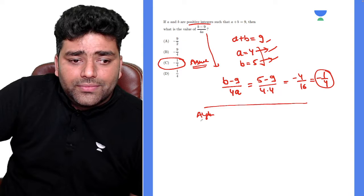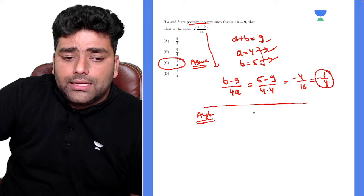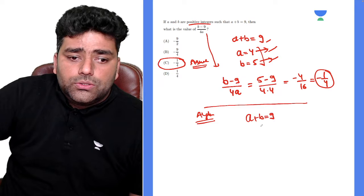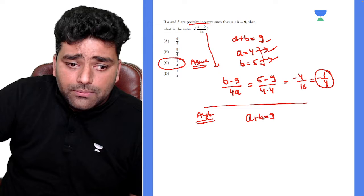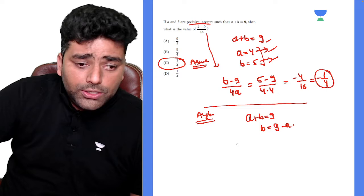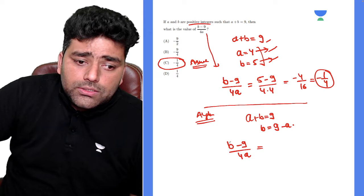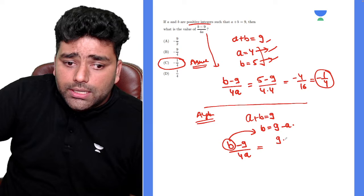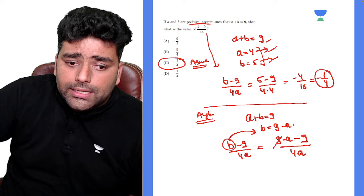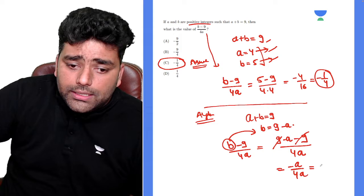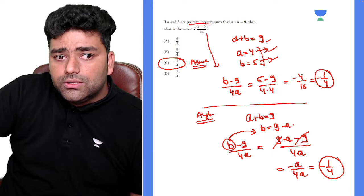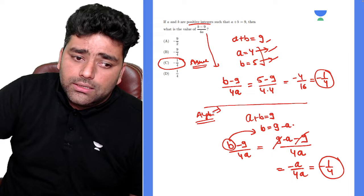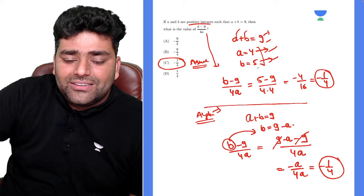Let me also show this algebraically. From a plus b equals 9, you get b equals 9 minus a. Substitute into (b minus 9) divided by 4a: you get (9 minus a minus 9) divided by 4a, the 9 and negative 9 cancel, leaving negative a divided by 4a, which equals negative one-fourth — the same answer. Both approaches work, but plug-in makes it much easier for students who struggle with algebra.